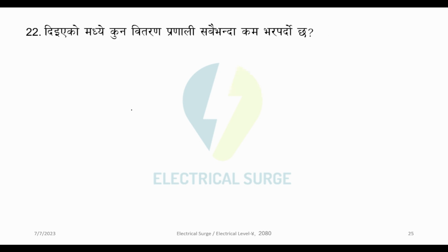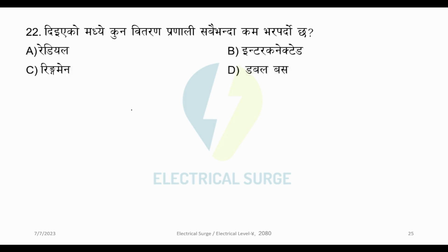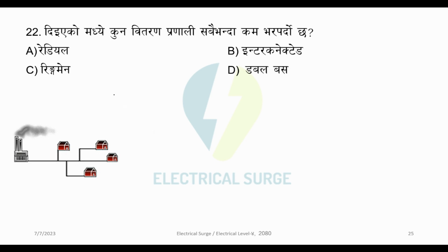Next question. Question number 22. Which distribution system has the highest load? Option A: Radial. Option B: Interconnected. Option C: Ring main. Option D: Double way. To answer this, we need to understand radial, interconnected, and ring main distribution systems.